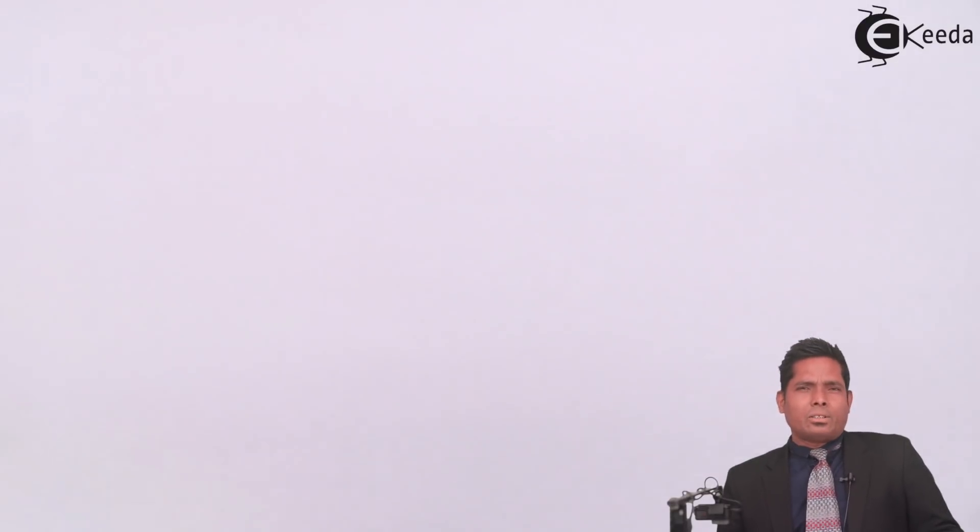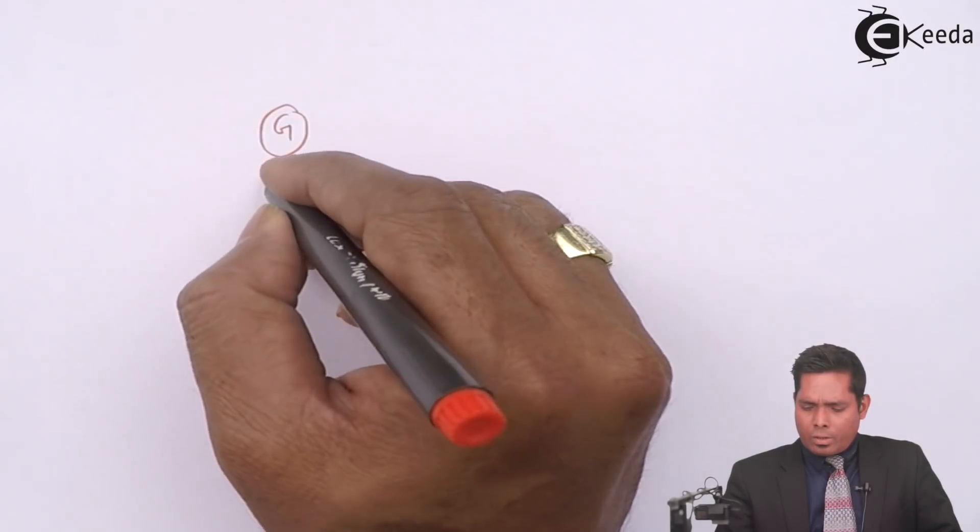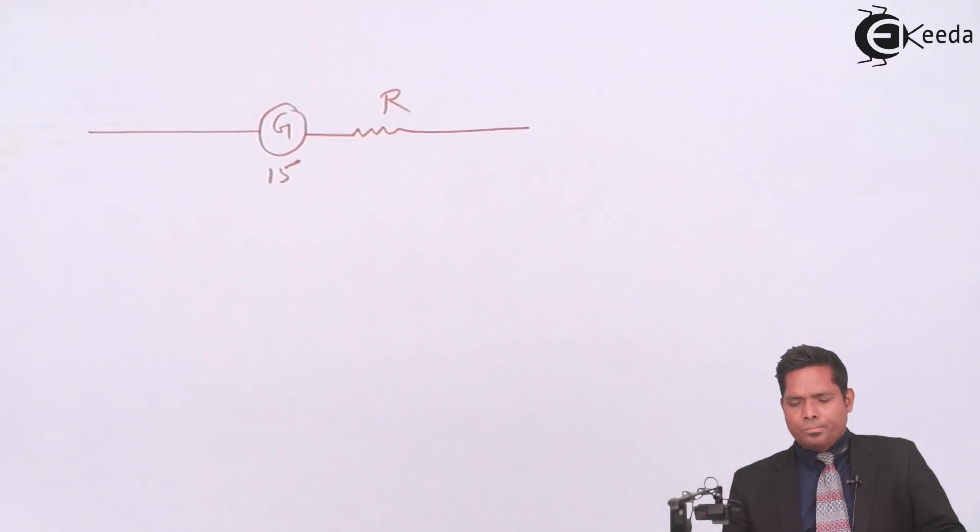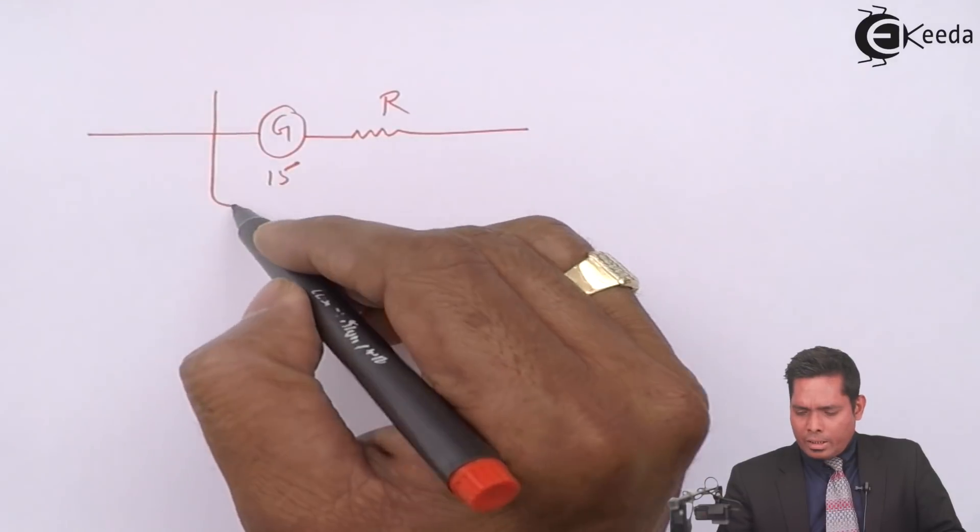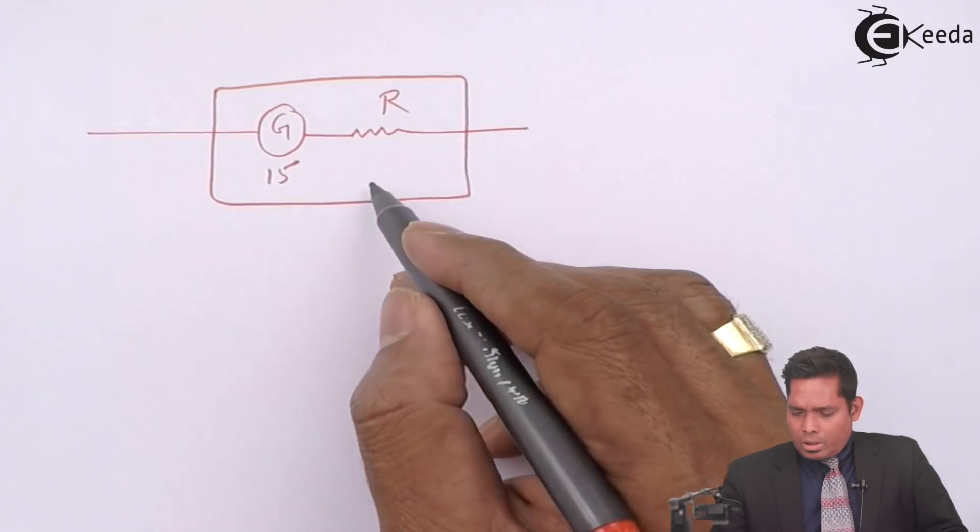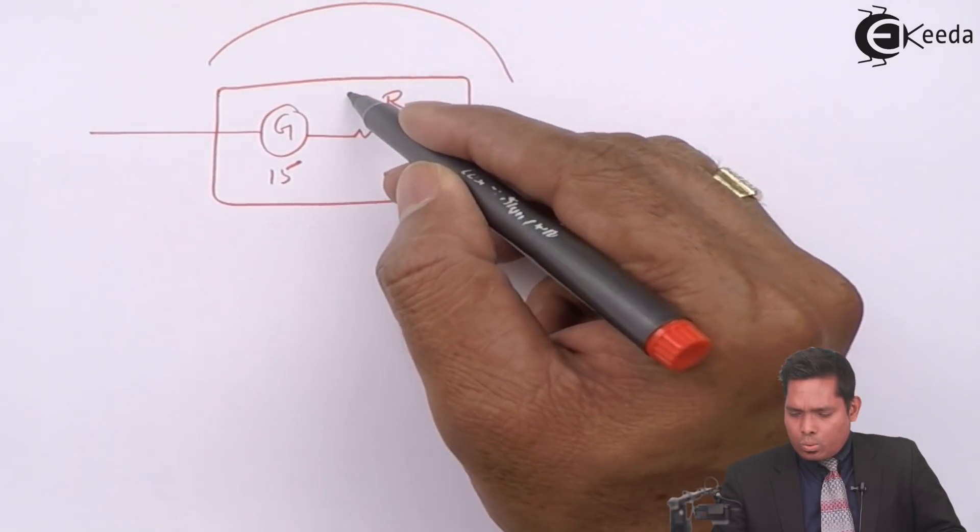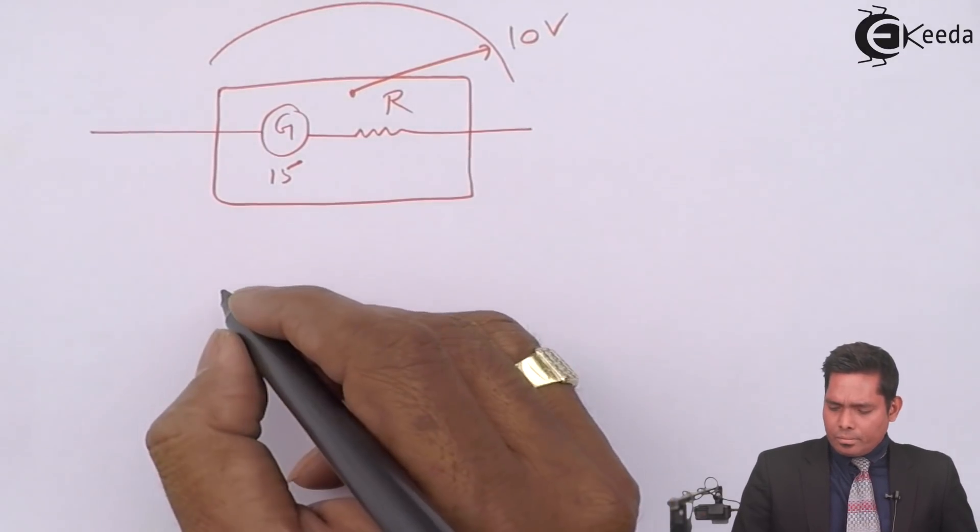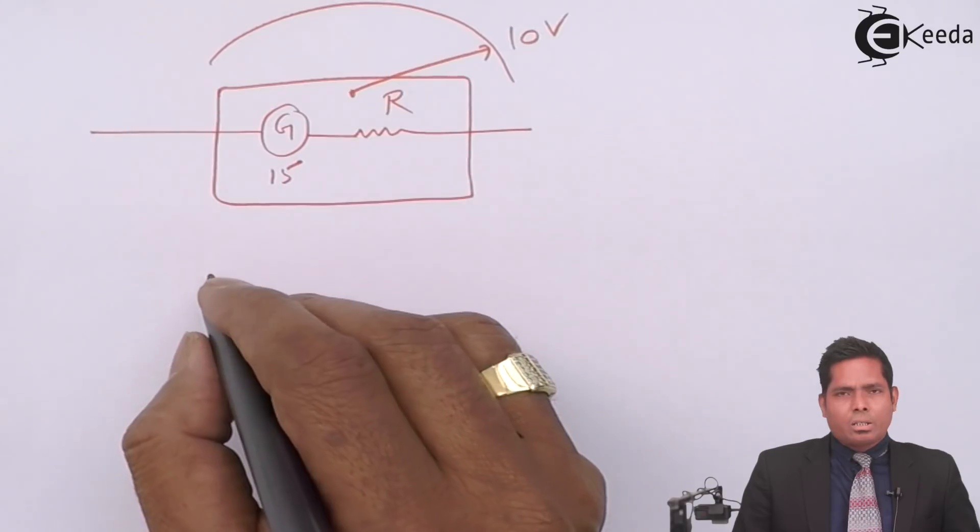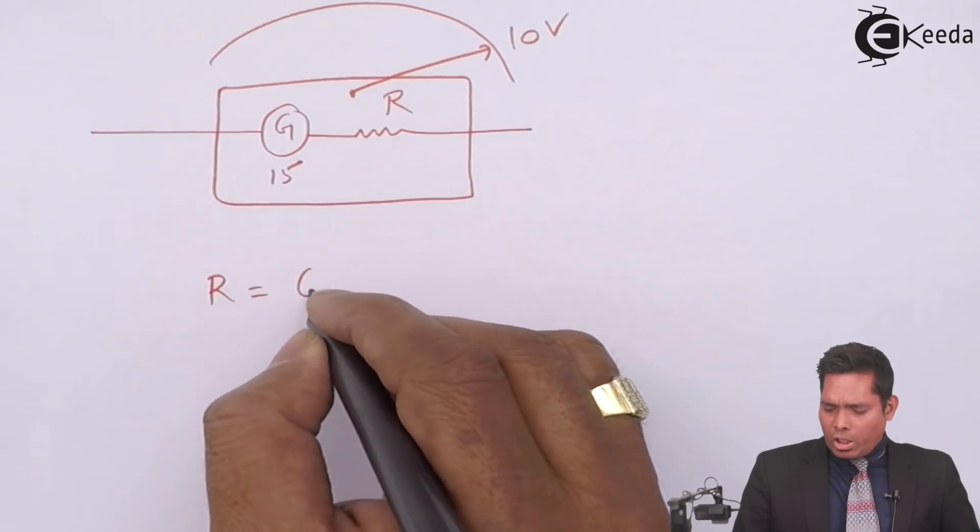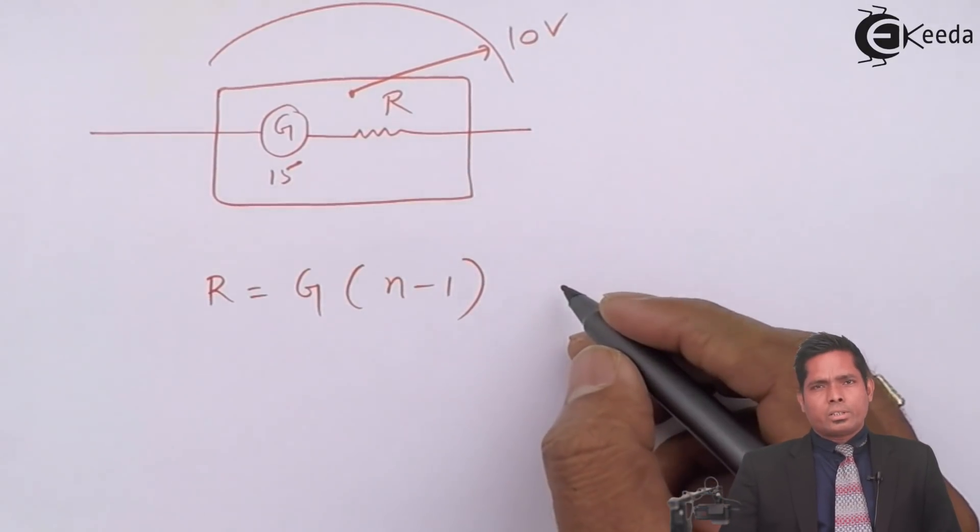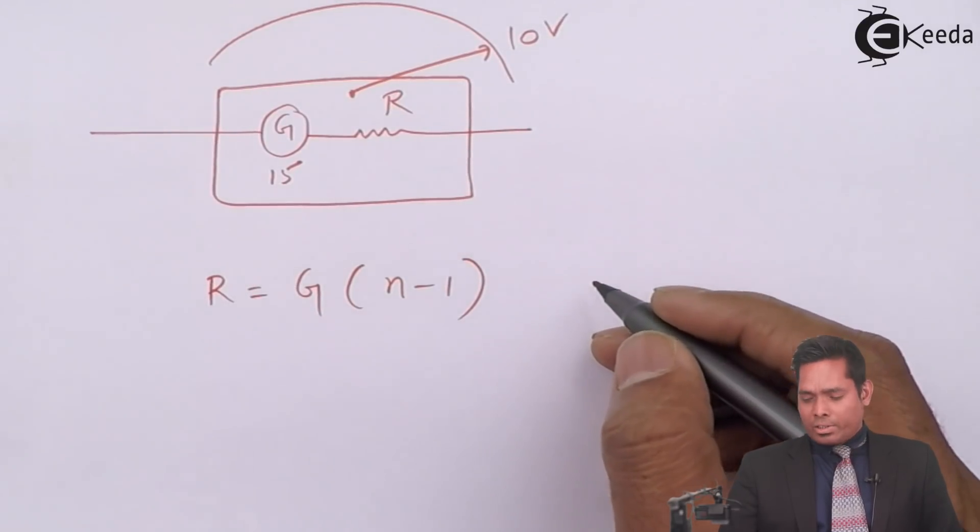Now for that I need a high resistance in series. So if with the galvanometer of 15 ohm I connect a high resistance, say R, in series, this is 15. Then together the range increases to 10 volt. So in that case I have an equation for R that is G into N minus 1. This is the formula that is used for changing the range, or for range formula in terms of voltage range.